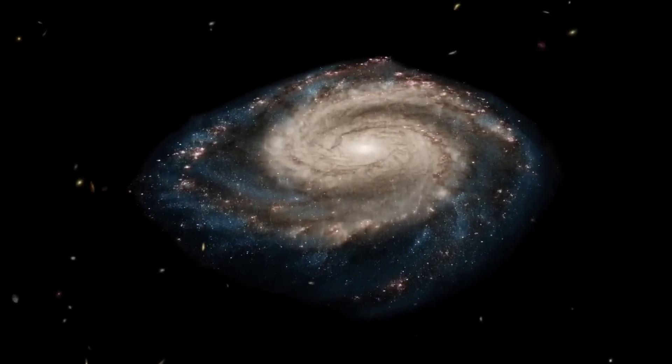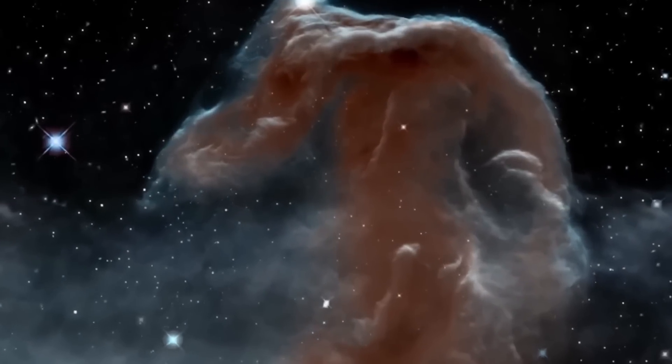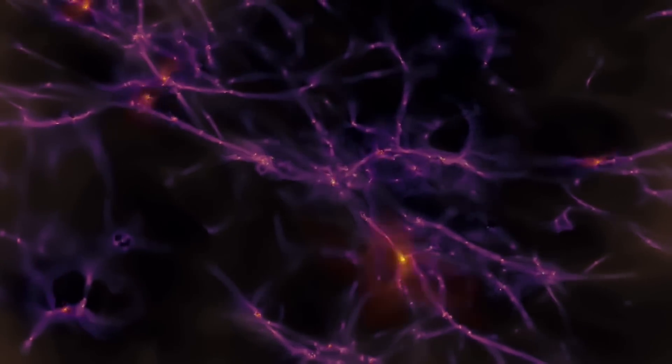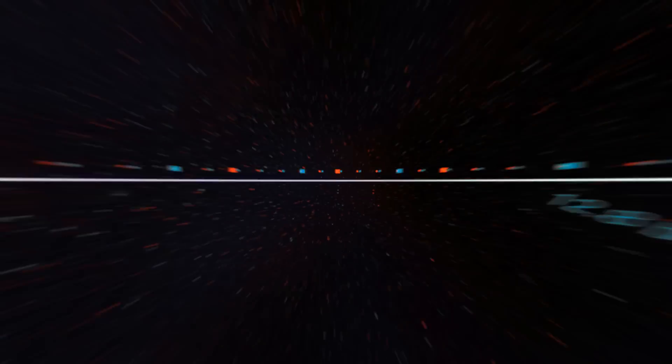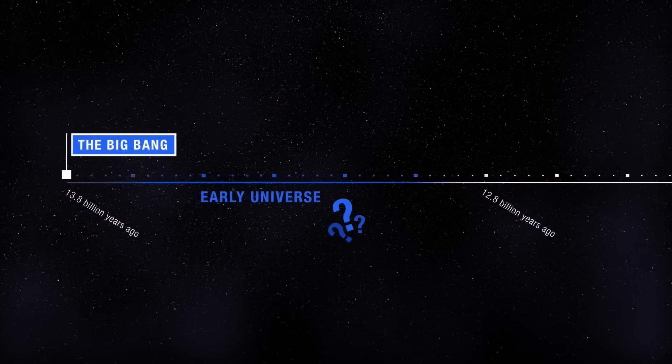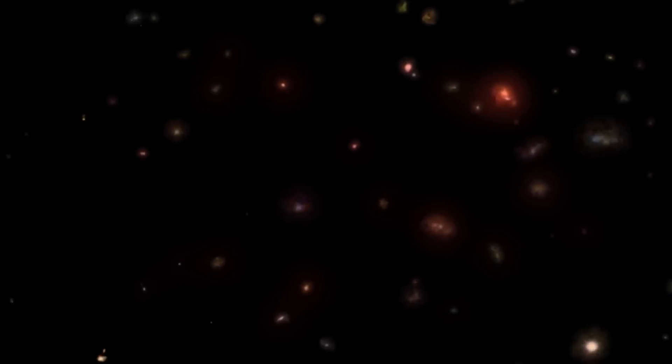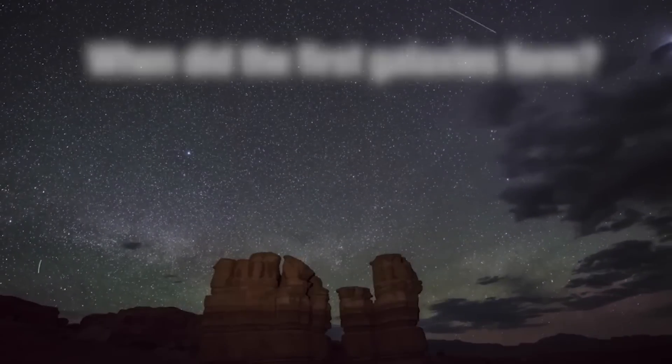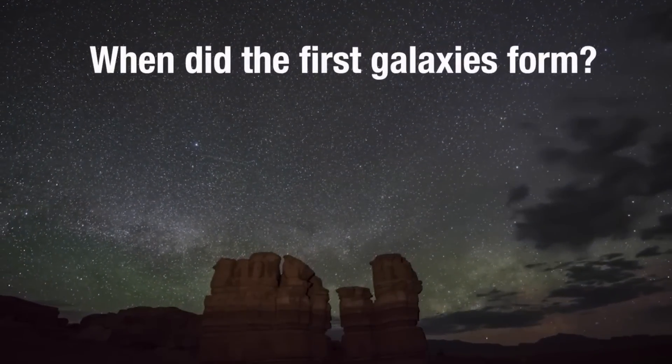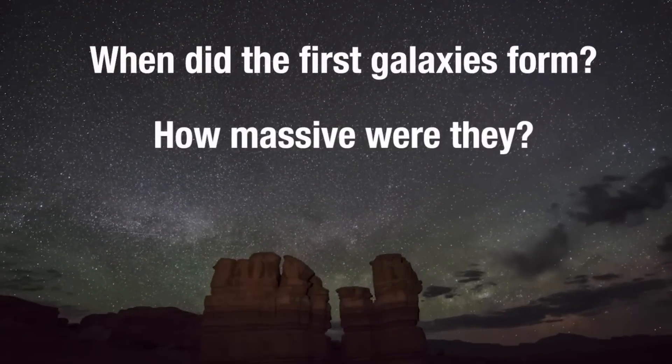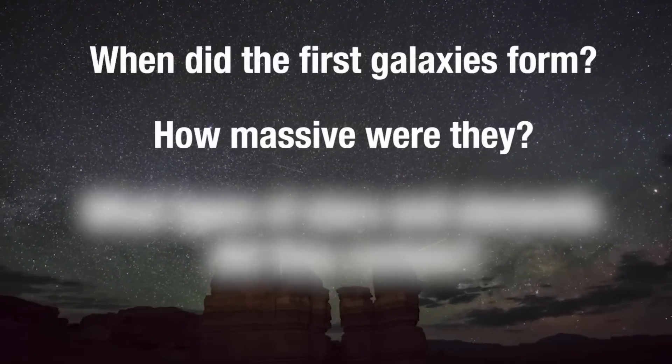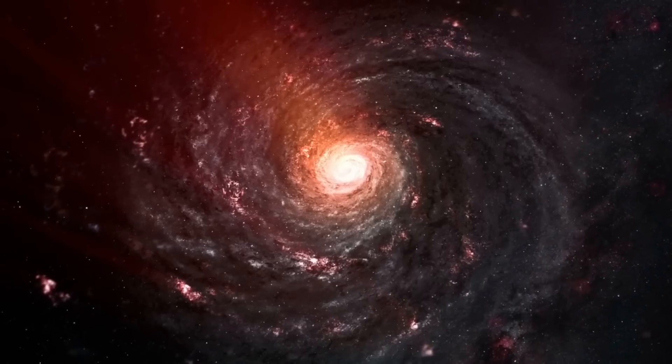The unveiling of six ancient galaxies more developed than the Milky Way earlier this year has launched a fresh epoch in our comprehension of the cosmos' evolution. Existing in an epoch just a few hundred million years after the Big Bang, their advanced development challenges existing models of galaxy formation and evolution. The most intriguing question that these findings raised was how these galaxies could have developed such complex structures in a relatively short period of time.